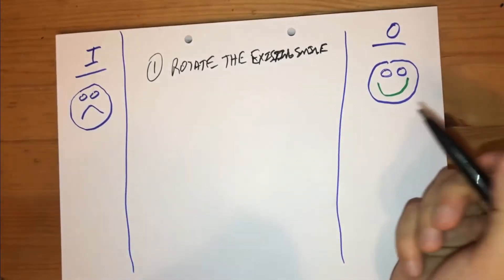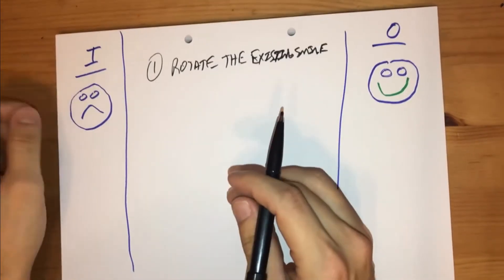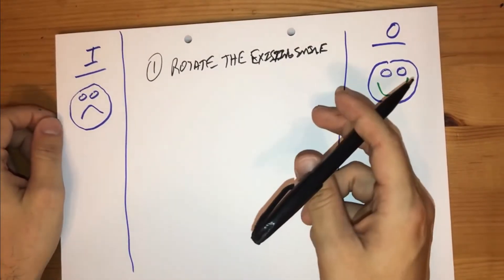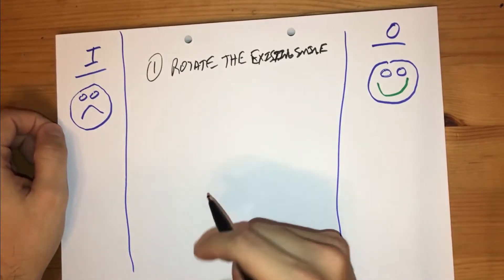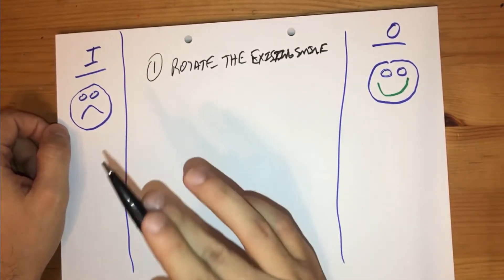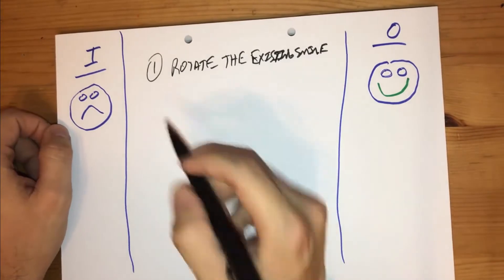Yep. So we could rotate the existing smile. No big deal there, right? That would get it to be at least an indicative smiley face. That's the goal here. We want to go from frowning state to smiling face.